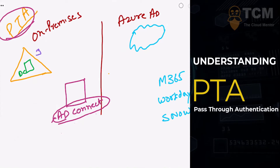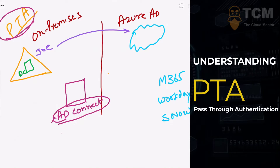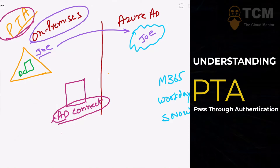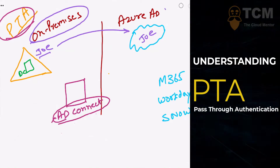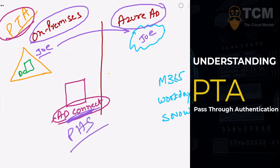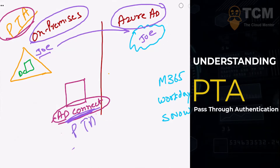Let's assume there's a user called Joe who's sitting on-premises. As a result of the AD Connect server sitting on-premises, Joe gets synchronized to Azure Active Directory as well. Regardless of how the AD Connect is configured — password hash synchronization or pass through authentication — users will get eventually synchronized to Azure Active Directory. However, whether it is the on-premises Active Directory or Azure Active Directory that does the authentication depends on how Azure Active Directory Connect is configured. If configured with password hash synchronization, Azure AD does the authentication; if configured with pass through authentication, the local Active Directory does the authentication.